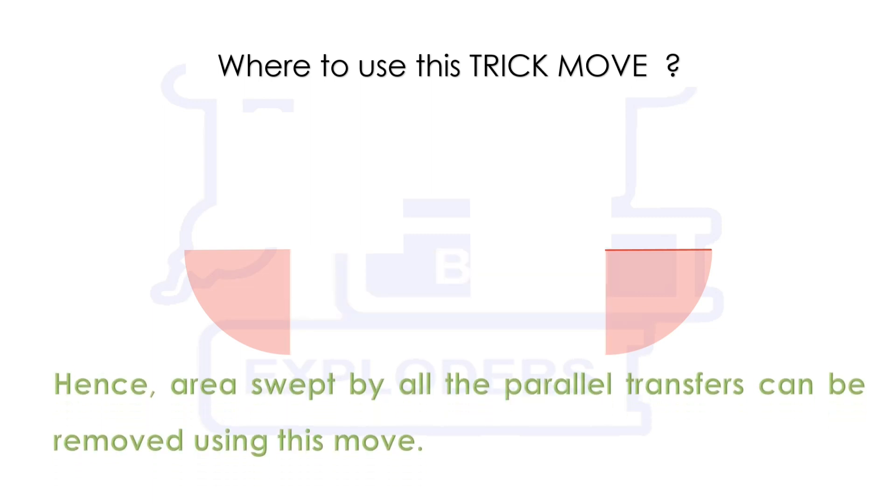Now in the second step we will know how to use this trick move. Suppose this is the path traced by a needle. Here this area is swept by it, so we can remove all that area in which the needle is sent from one to another parallel position.